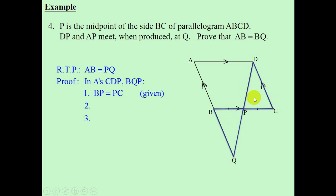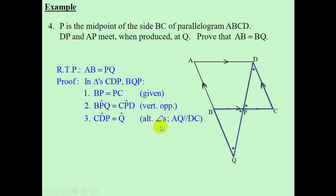I have taken the two triangles shown in blue — let's try and prove these two triangles congruent. Number one: BP is equal to BC, and the reason is it's given — P is the midpoint of side BC. Number two: vertically opposite angles — angle BPQ is equal to angle CPD. Number three: angle Q equals angle D, and the reason is alternate angles. So we have a case: angle, angle, side — therefore the two blue triangles are congruent, and the case is side, angle, angle.